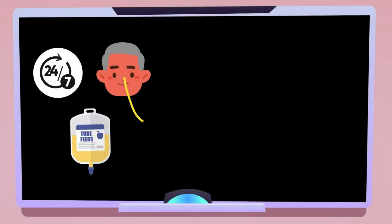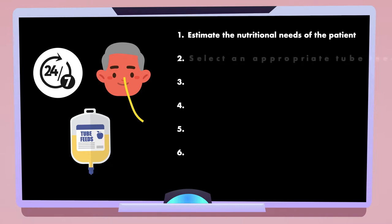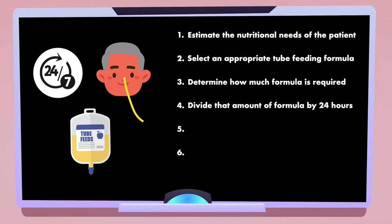We begin by looking at the six-step algorithm that I just mentioned. The first step is to estimate the nutritional needs of the patient. Then you select an appropriate tube feeding formula, determine how much formula is required to meet the estimated nutritional needs, and divide that rate of formula by 24 hours to get the feeding rate.